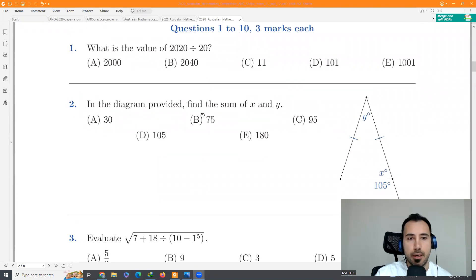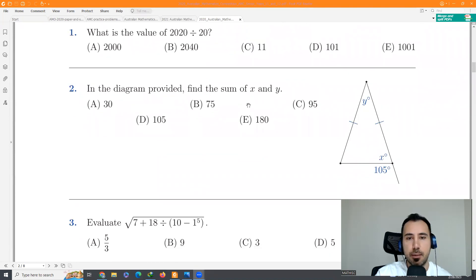Question two. In the diagram provided, find the sum of x and y. If you are not an English speaker, sum means plus. And another thing, pay attention to these degrees. We're not looking for the lengths, we're looking for the degrees. We know that this side is the same as this side. For that reason, this is also x degrees. And we know that x plus y, these two are the same as 105. So that's the answer.